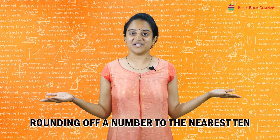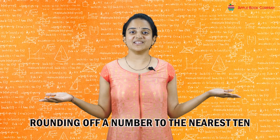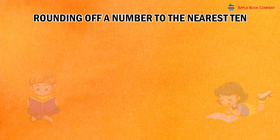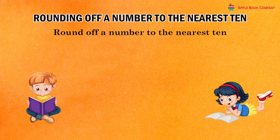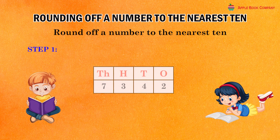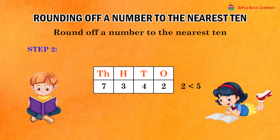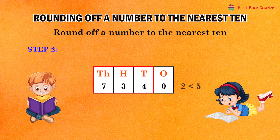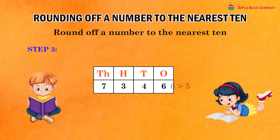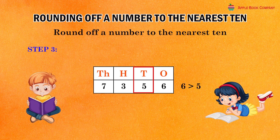Rounding of a number to the nearest ten. To round off a number to the nearest ten, we follow the following steps. See the one's digit of the given number. If the one's digit is less than five, replace the one's digit by zero and keep the other digits as they are. If the one's digit is five or more, increase the ten's digit by one and replace the one's digit by zero.